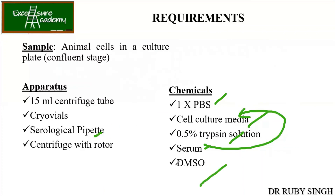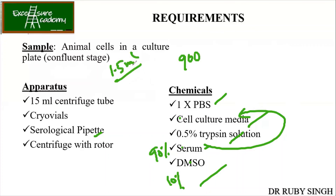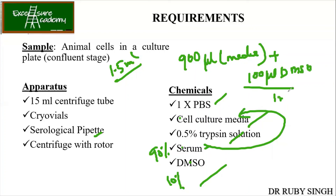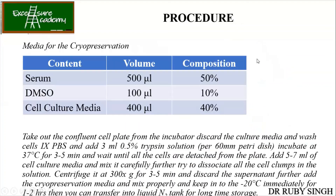Everything we have used: PBS, media, trypsin, serum, and DMSO. Serum and media together will be 900 microliters, and DMSO will be 100 microliters — so total it is 1 ml. The cryovial has 1.5 ml capacity but users add only 1 ml. Tightly screw the cap and then start doing your freezing steps. Sometimes people use different compositions — for example, serum 50% and media 400 microliters making 900 total, then DMSO 10% which is 100 microliters.